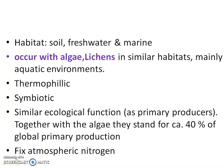Habitats of cyanobacteria are soil, fresh water, and marine ecosystems. They also occur with algae, lichens, and similar habitats, mainly aquatic environments. Some of them are thermophilic in nature, meaning they are found in hot springs. Some are symbiotic in nature, occurring with algae, lichens, and in protozoa-symbiotic relationships.